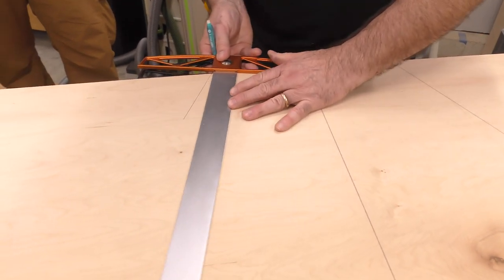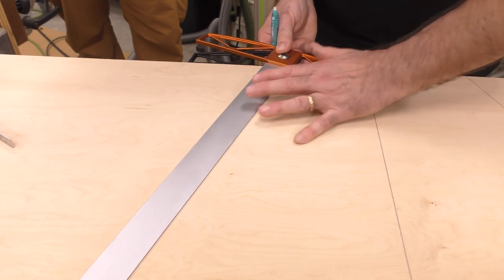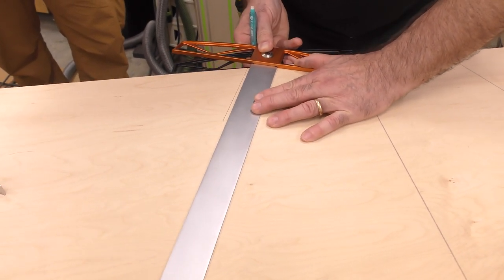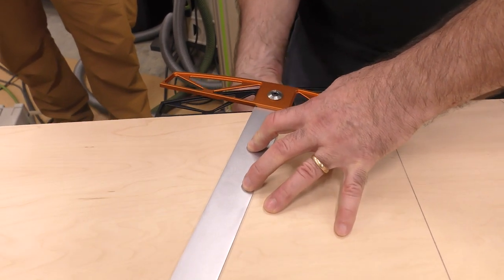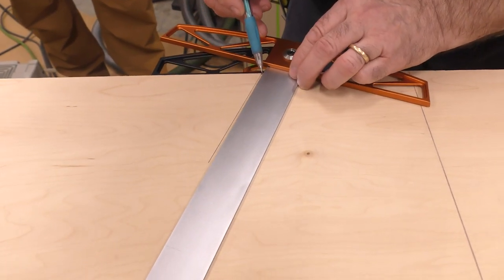Then I'll take this Bridge City adjustable square just like this. And for everybody who is looking at this video, we'll have a link. And look how easy that is. Just link it up like this and I'll bring it in, bring my pencil mark just like this all the way out.